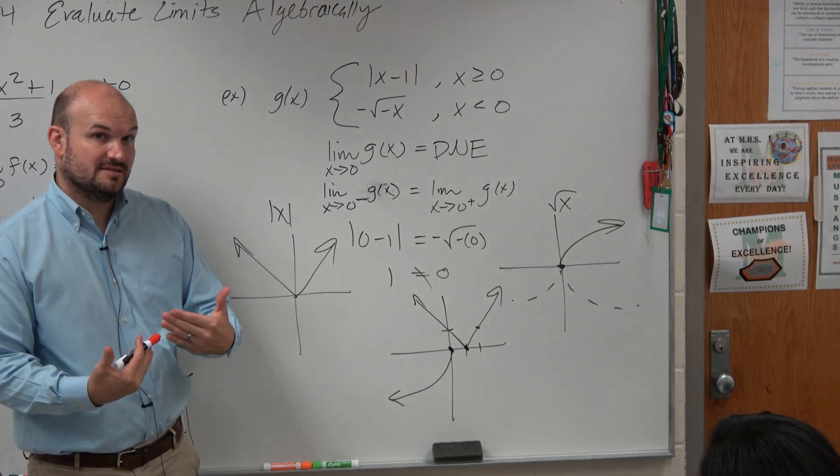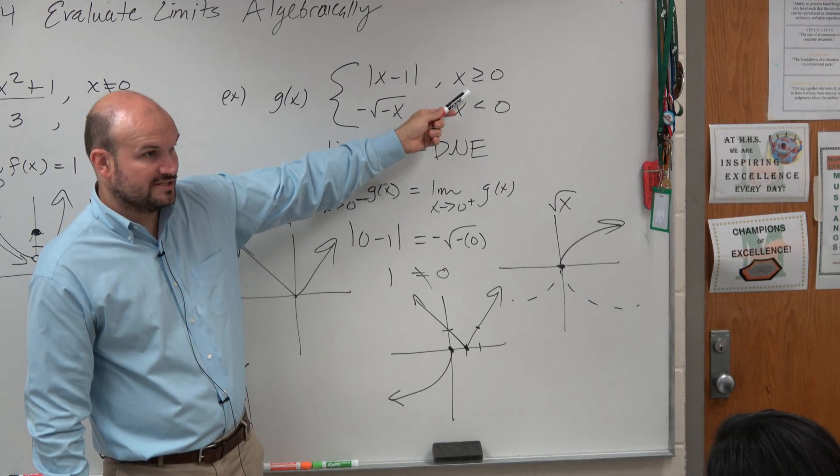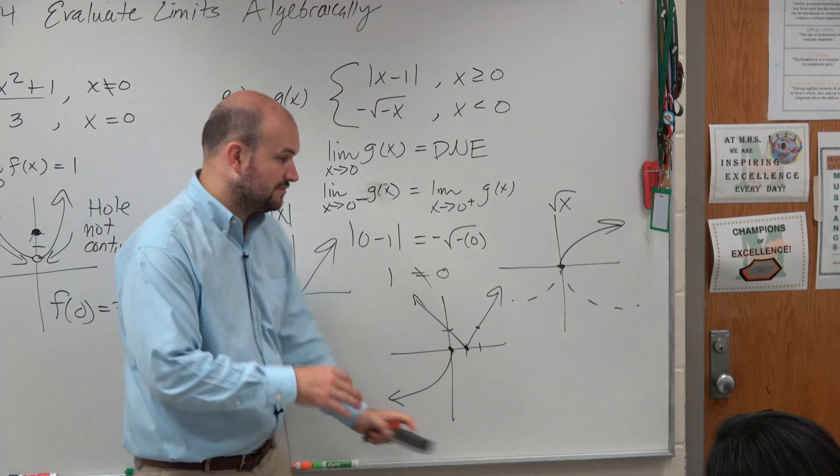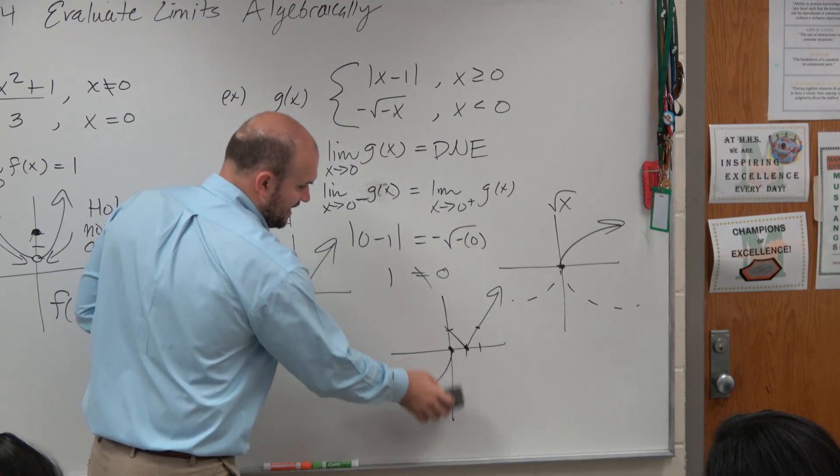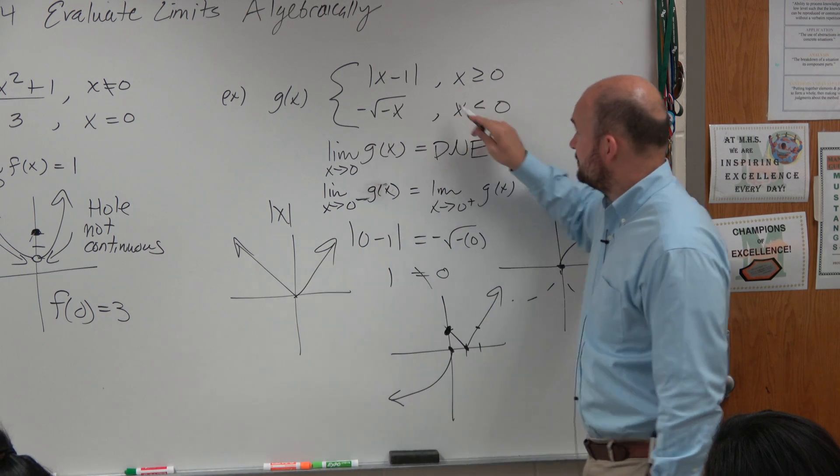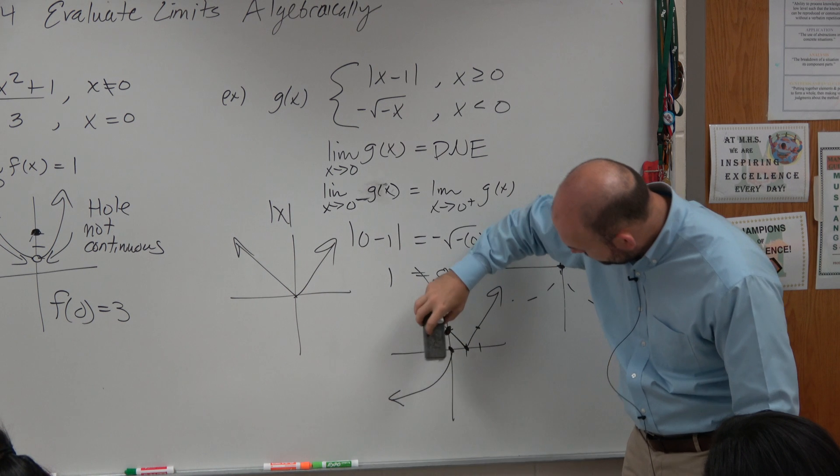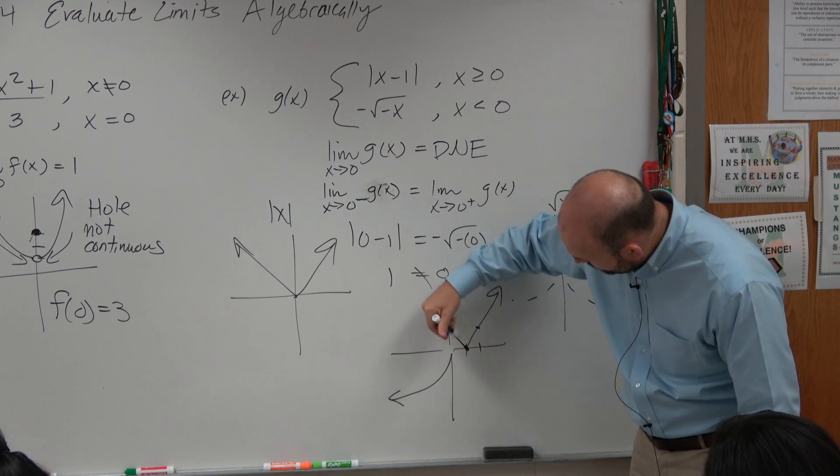But now let's talk about the constraints. This graph is only good for when it's greater than 0. So greater than or equal to 0. So basically, everything to the left gets eliminated. And this graph is only good for when x is less than 0, not equal to 0. So therefore, right here is a hole.